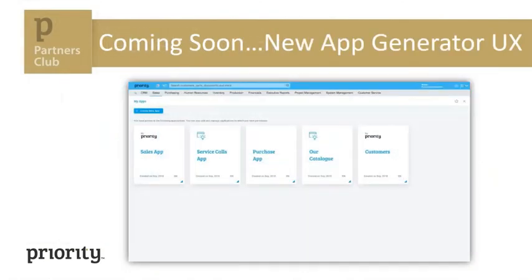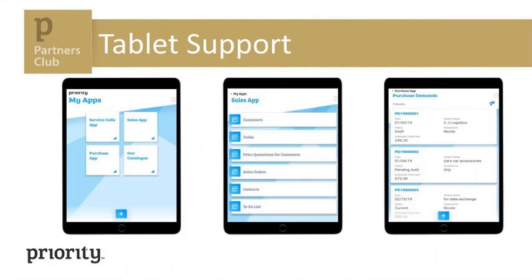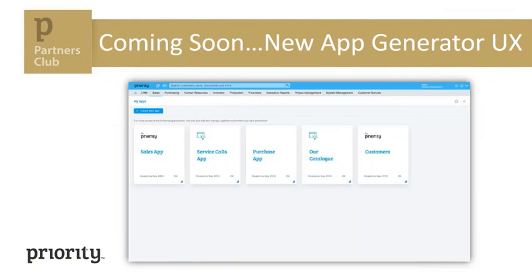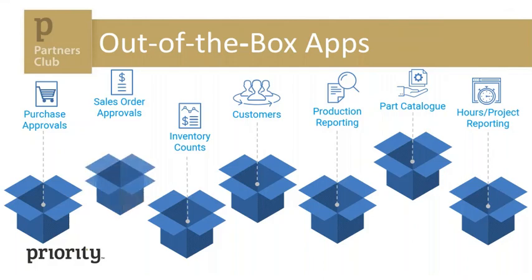Everything I showed was done for Android and for iOS of course, and it is also supported on tablets. On the next version we will also change the way the App Generator form looks — the form in Priority in which you build the application — to give it a more modern look that fits the application itself. We also added predefined applications: to the purchase approval application released on the last version, we've now added applications for hours reporting to projects, production reporting, customer management, sales orders approval, inventory, accounts, and part catalog.